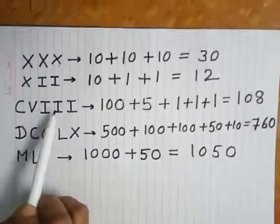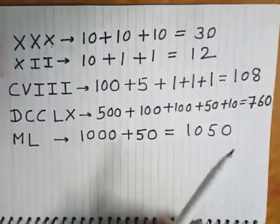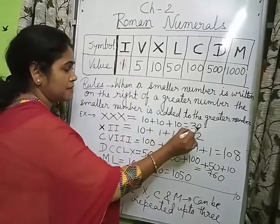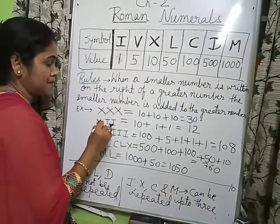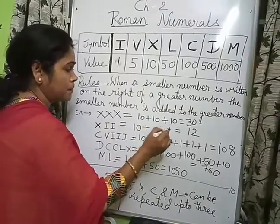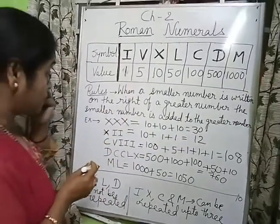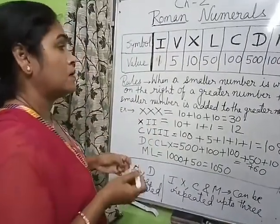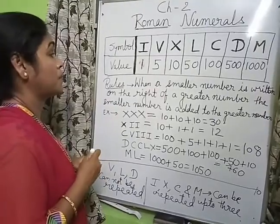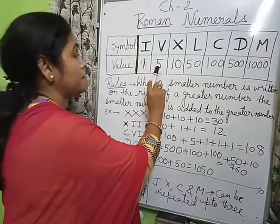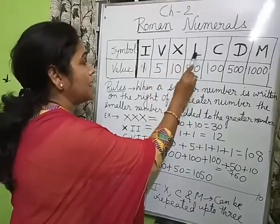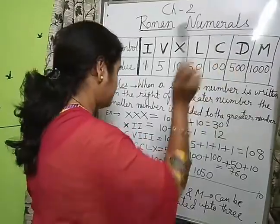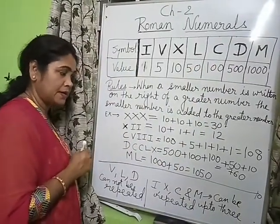Repetition is possible only in the case of addition. Note it down: X plus X plus X means 10 plus 10 plus 10 equals 30. X plus I plus I means 10 plus 1 plus 1 equals 12. Repetition applies to I, X, C, and M only — maximum three times each. We cannot repeat V, L, or D. So 1, 10, 100, and 1000 (that is I, X, C, and M) can be repeated, but 5, 50, and 500 (V, L, D) cannot.